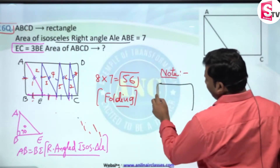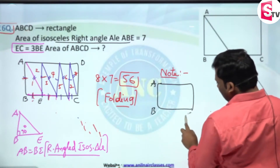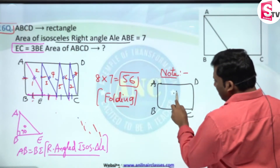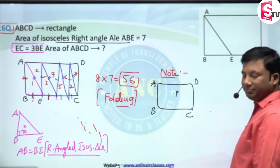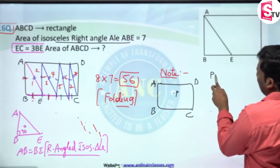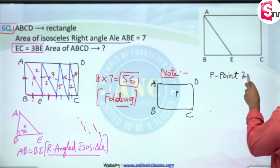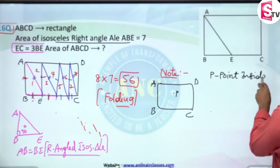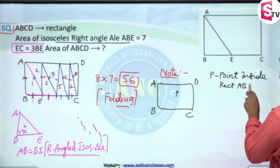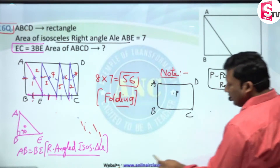ABCD is a rectangle. P is a point inside the rectangle ABCD. This is a very very important property. P is a point inside the rectangle ABCD. Now join P to each vertex and drop perpendiculars from P to each side — you will get the answer.